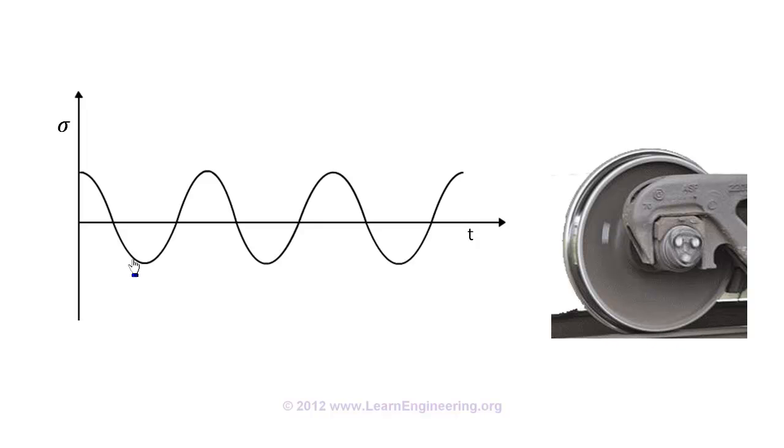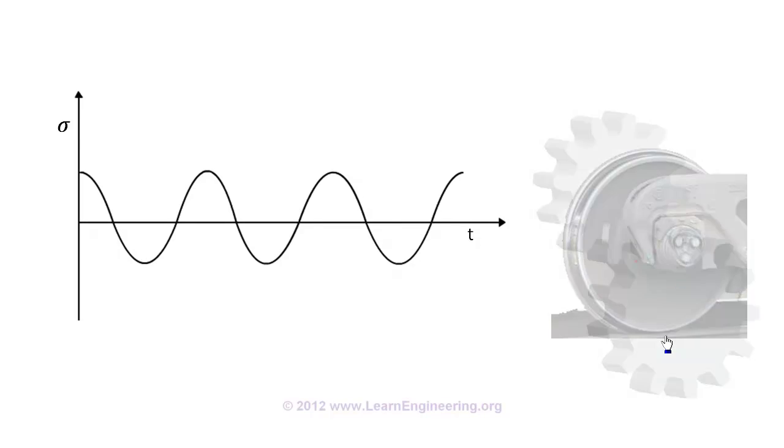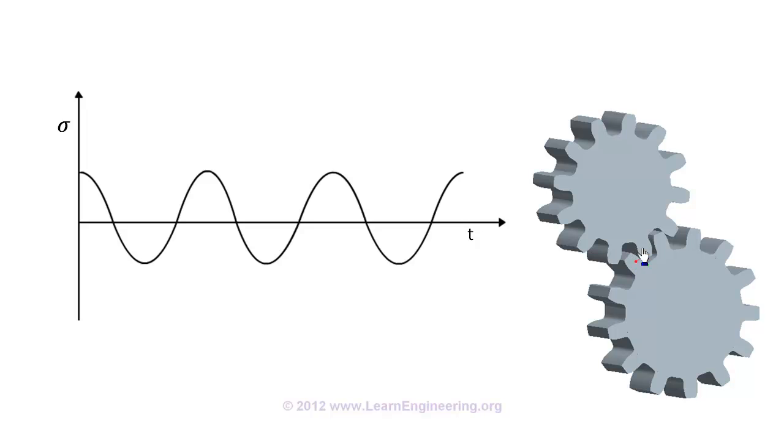So this also is a case of fluctuating stress. It may fail due to fatigue, if we do not design it properly. Same is the case with gear pair. Here contact stress arises at mating point.